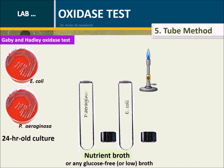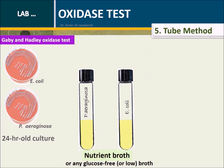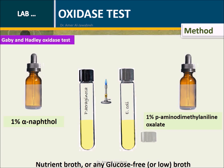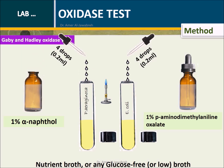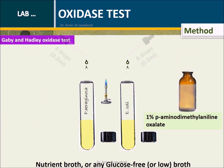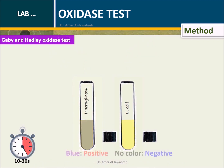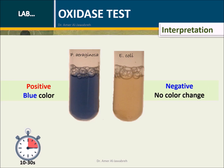Method 5 — Tube method: Grow a fresh culture of Pseudomonas aeruginosa and E. coli separately in 4.5 ml of nutrient broth or standard media with low or no sugar. Incubate at 35 to 37 degrees centigrade for 24 hours. Add 4 drops of 1% alpha-naphthol, then add 6 drops of 1% para-aminodimethylaniline oxalate, the Gaby-Hadley reagent. Shake vigorously to ensure mixing and thorough oxygenation of the culture. Observe for color change within 10 to 30 seconds. Blue color indicates positive results; no color change indicates negative results. Delayed oxidase positive: color changes to blue within 2 to 3 minutes.